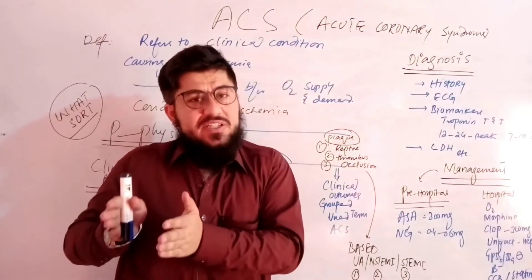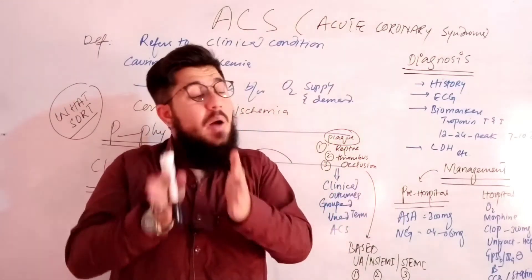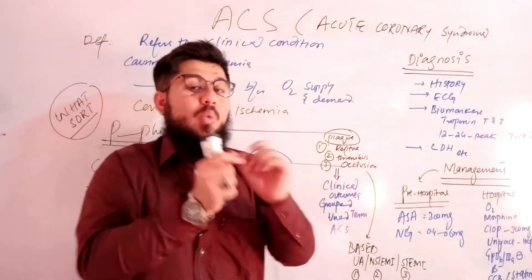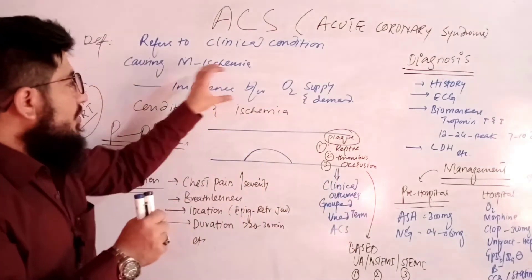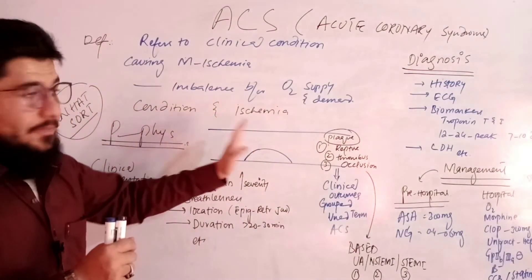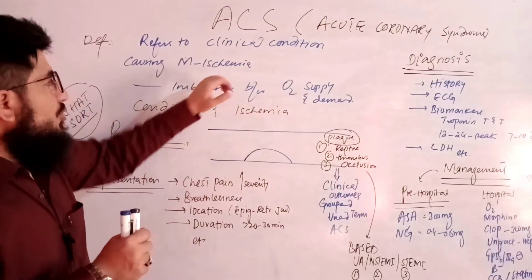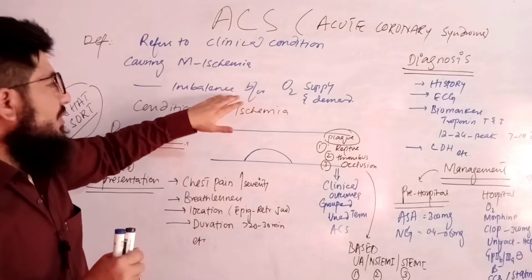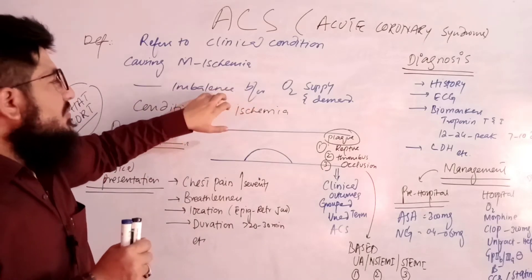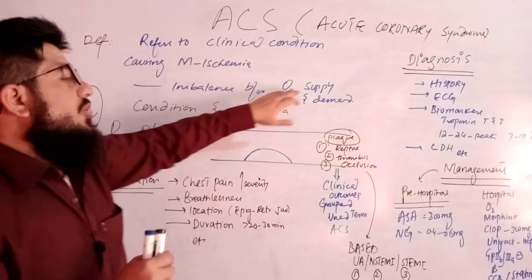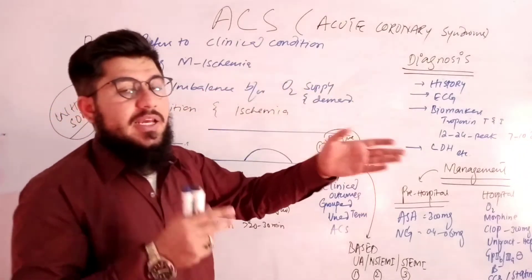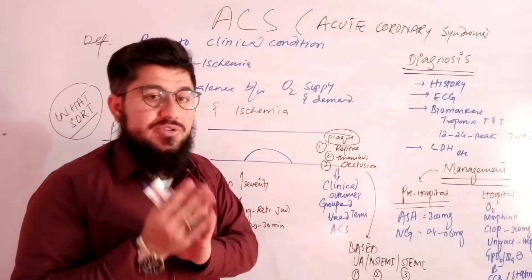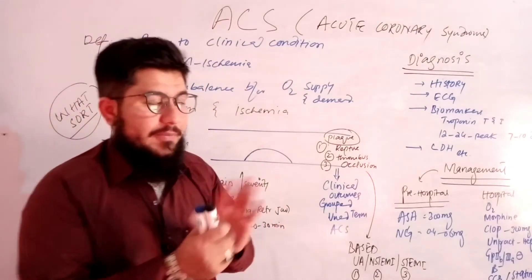How is it causing myocardial ischemia? We'll explain that in the pathophysiology. In ischemia, there will be an imbalance between oxygen supply and demand.